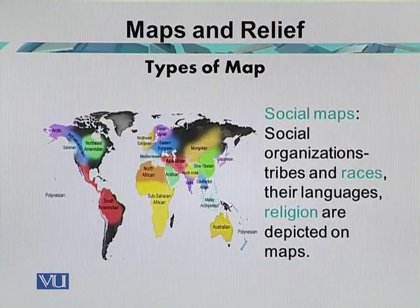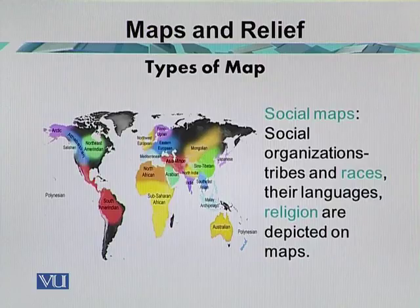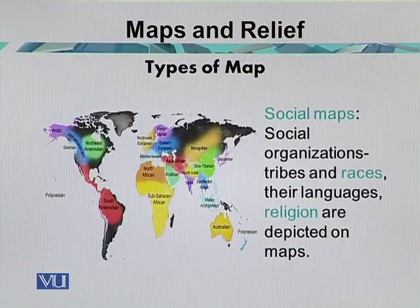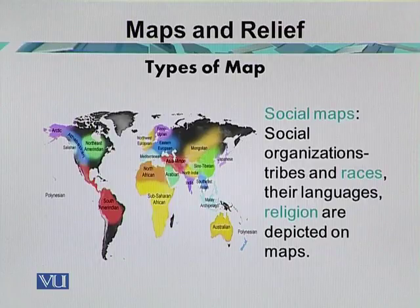The second category of map according to purpose is the social map. Social maps depict organizations, tribes and races, their languages, and religion. These maps are made using certain techniques for specific purposes. Sometimes these maps are made to depict certain religions — for example, showing which areas Muslims are concentrated in.